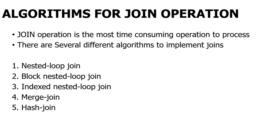Coming to the algorithm for join operation, we will go for this join operation. When you say join operation, it is going to involve two tables. Only if you have two tables will you combine them. When you join two tables and access the data, instead of searching separately in each table, your time will be reduced. The several algorithms that come under join are: nested loop join, block nested loop join, index nested loop join, merge join, and hash join.